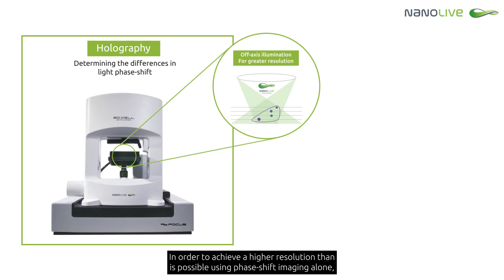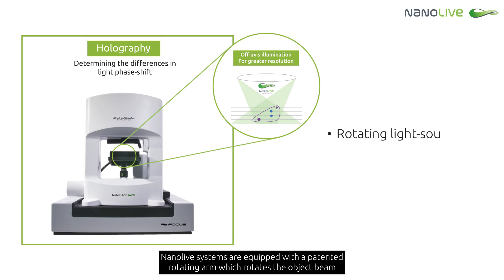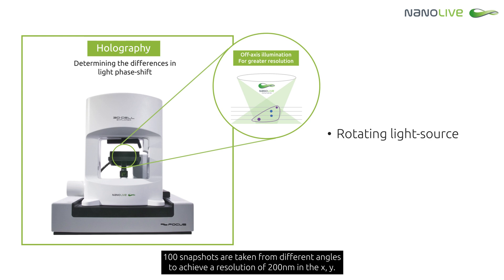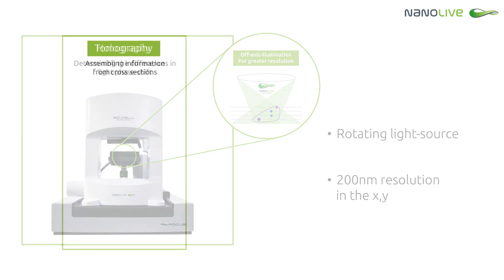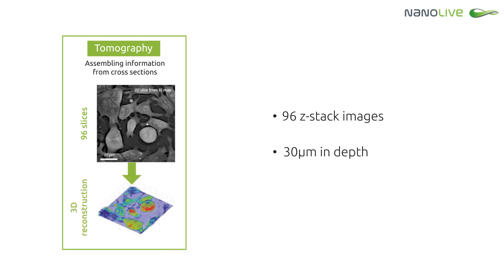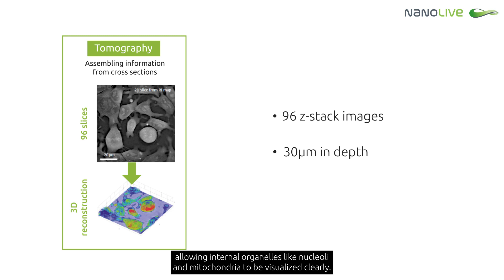In order to achieve a higher resolution than is possible using phase shift imaging alone, Nanolive systems are equipped with a patented rotating arm which rotates the object beam 360 degrees around the sample. 100 snapshots are taken from different angles to achieve a resolution of 200 nanometers in the XY. 96 2D image slices are taken in the Z-stack covering 30 microns in depth, allowing internal organelles like nucleoli and mitochondria to be visualized clearly.